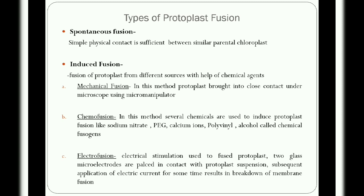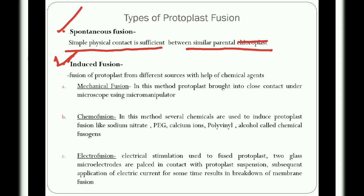Plant protoplast fusion is a physical phenomenon where two or more protoplasts come into contact, adhere with one another either spontaneously or in the presence of fusion-inducing chemicals, and their membranes fuse in localized areas until the cytoplasm intermixes. There are two types: spontaneous fusion and induced fusion. In spontaneous fusion, protoplasts fuse during isolation by simple physical contact. It has little significance in somatic hybridization but is important in cytological studies on the structure and function of plasmodesmata, mitosis, and nuclear fusion.